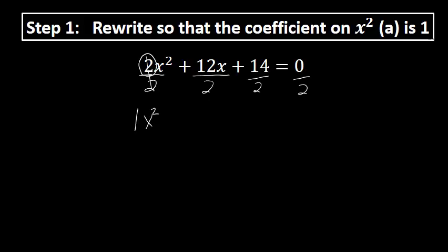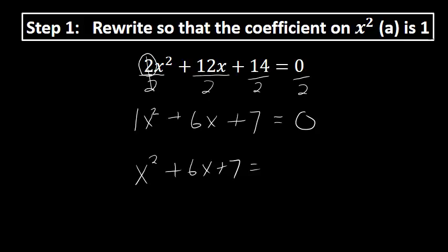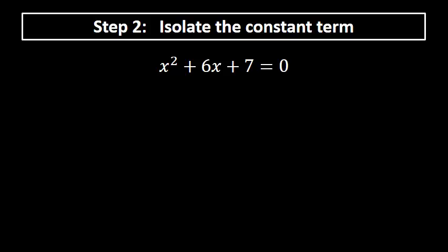Dividing every term by 2: 12x divided by 2 becomes 6x, 14 divided by 2 is 7, and 0 divided by 2 is still 0. This gives us x squared plus 6x plus 7 equals 0. The coefficient in front of x squared is now 1.